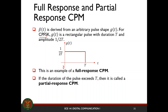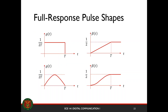If the duration of the pulse exceeds T, we call that a partial response. We're only going to limit our responses to integer multiples of T. For some full response pulse shapes, we have the rectangular pulse and the half cosine pulse. The integral of the pulse stays constant after time T — for the half cosine pulse, it's constant at one half after time T.